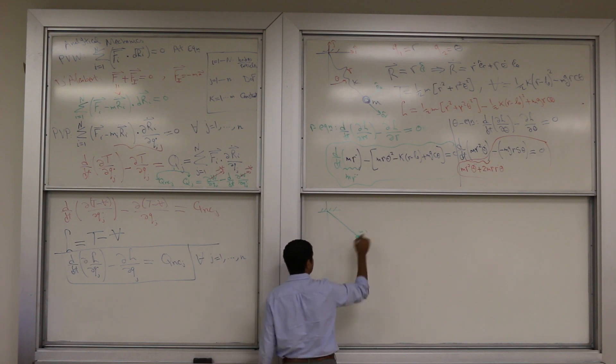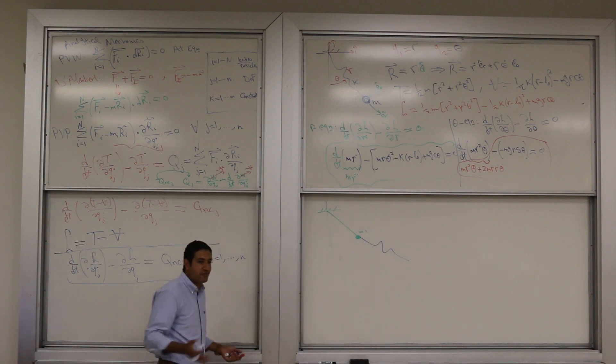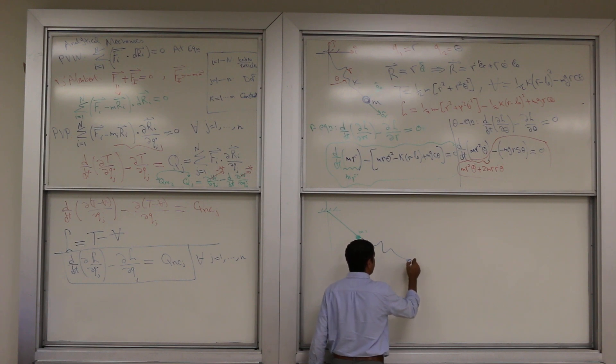Another example, a rigid, massless prompt. Here is M1, and then from this line, we have a spring.